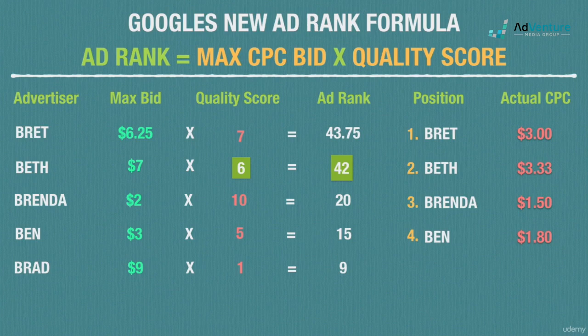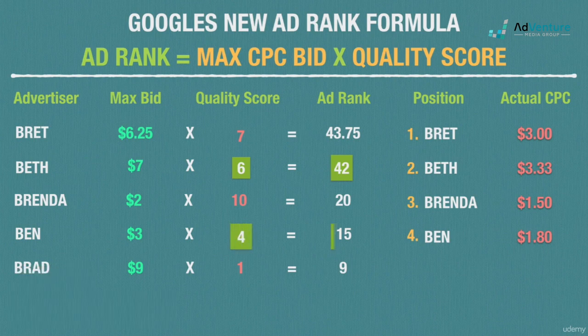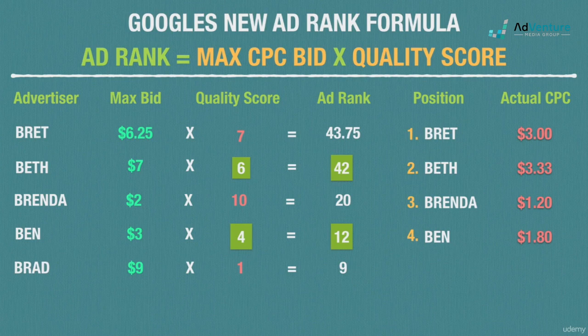Brenda can't improve her quality score beyond 10 — is she paying the absolute minimum to maintain position 3? Yes and no. She's paying the lowest possible CPC for position 3 in this scenario. But theoretically, if Ben's quality score were a 4 instead of 5 — making his ad rank 12 — Brenda would only pay $1.20 per click. The quality of competitors' ads makes a real difference in the CPCs you have to pay.